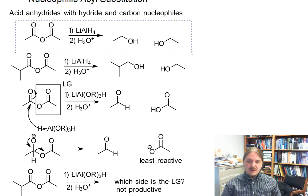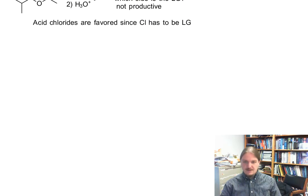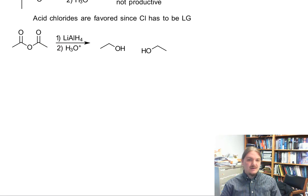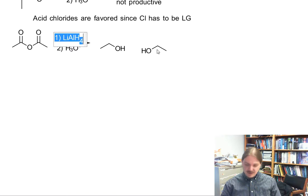Acid chlorides are a favorite for this kind of reaction because the chlorine has to be the leaving group. Now, let's go grab my original anhydride.